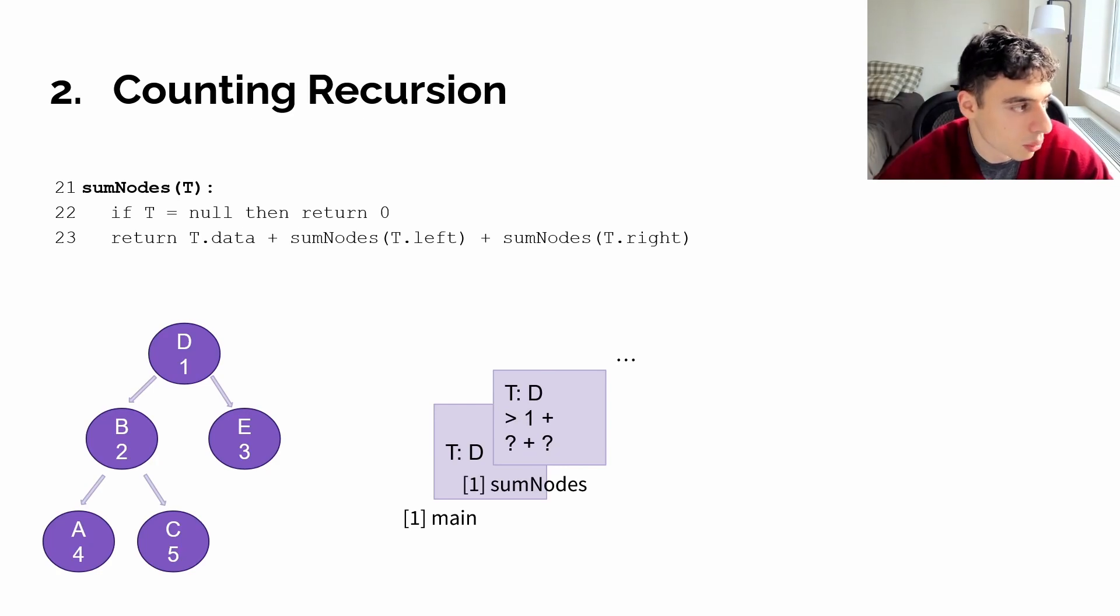In our first frame, we're going to want to return the data at our current node, which is one, and then the sum of one and some other call to the sum nodes function. Over at this point, the stack frame one has to pause and wait for sum nodes on T left to terminate. And sum nodes on T left will operate in the same manner, pausing until its left child is available, or its function over its left child is available.